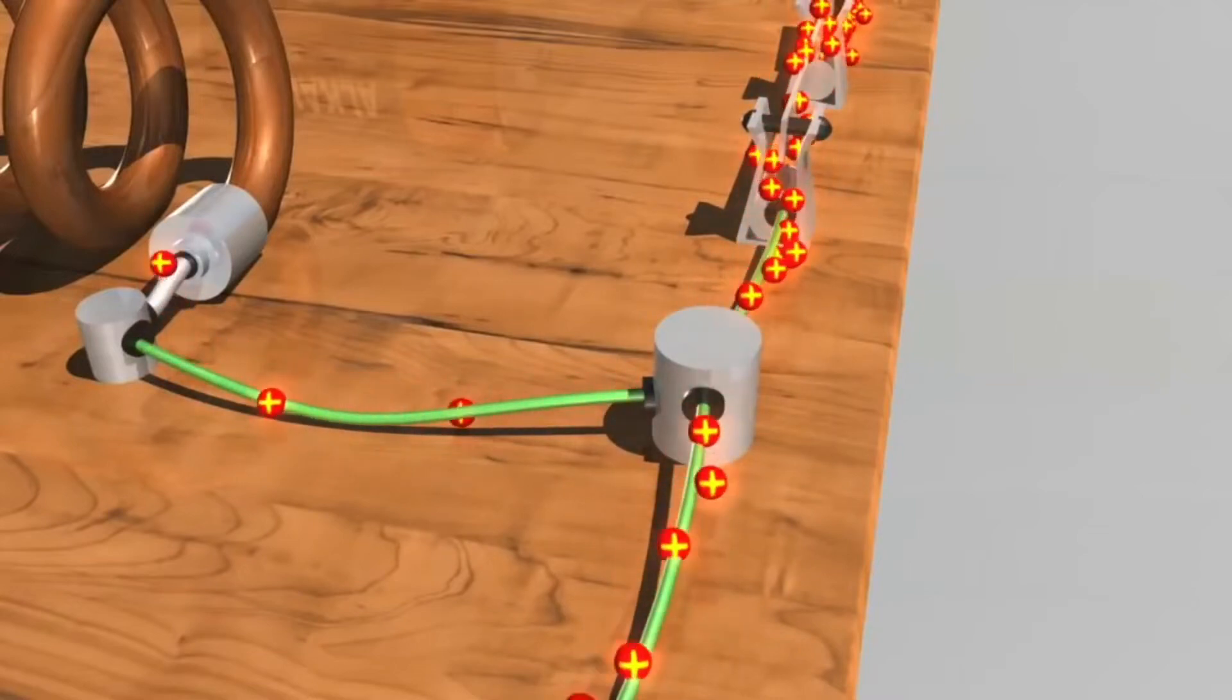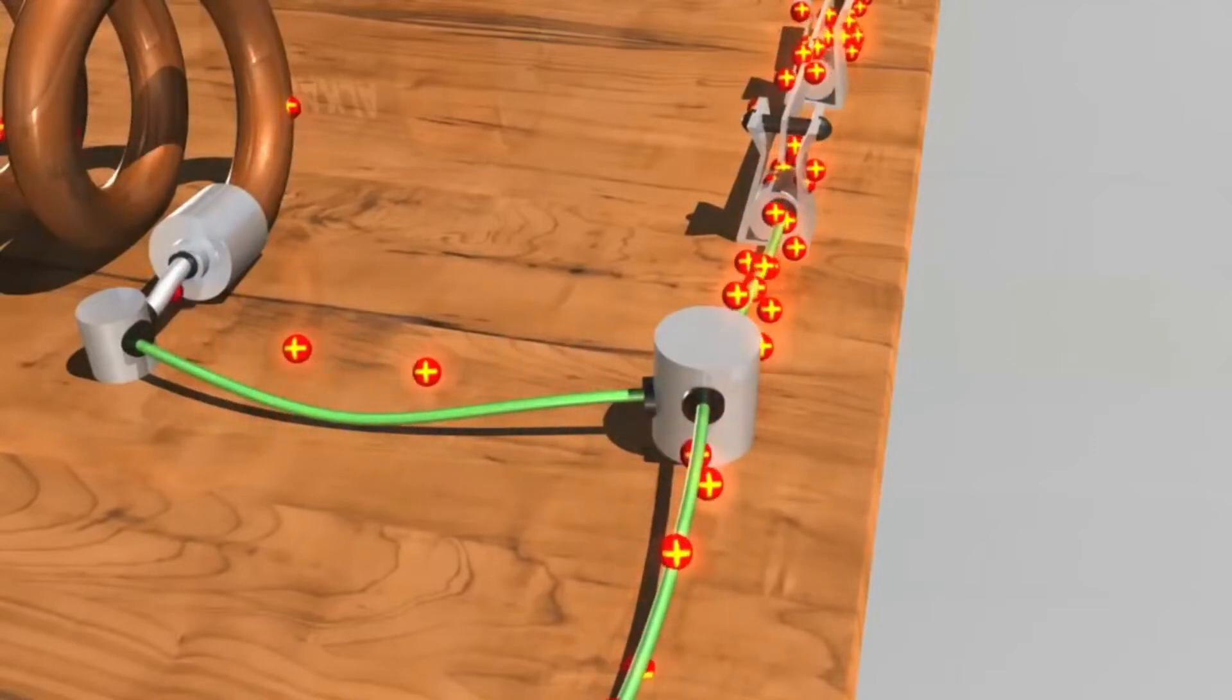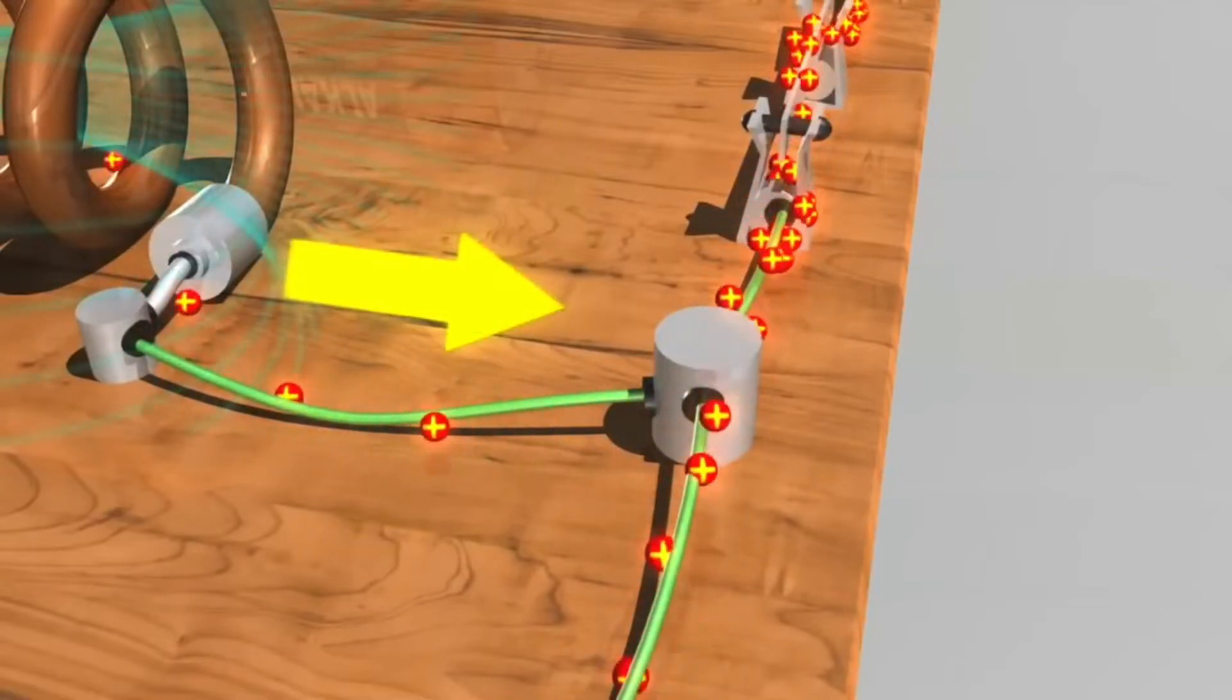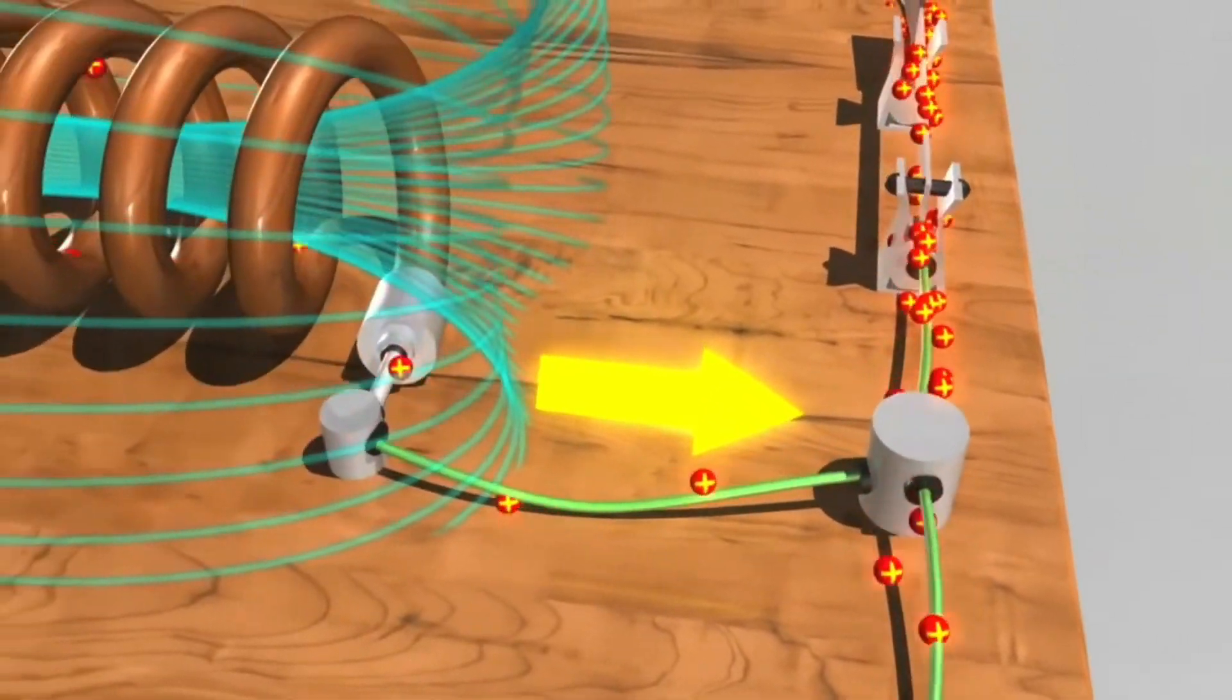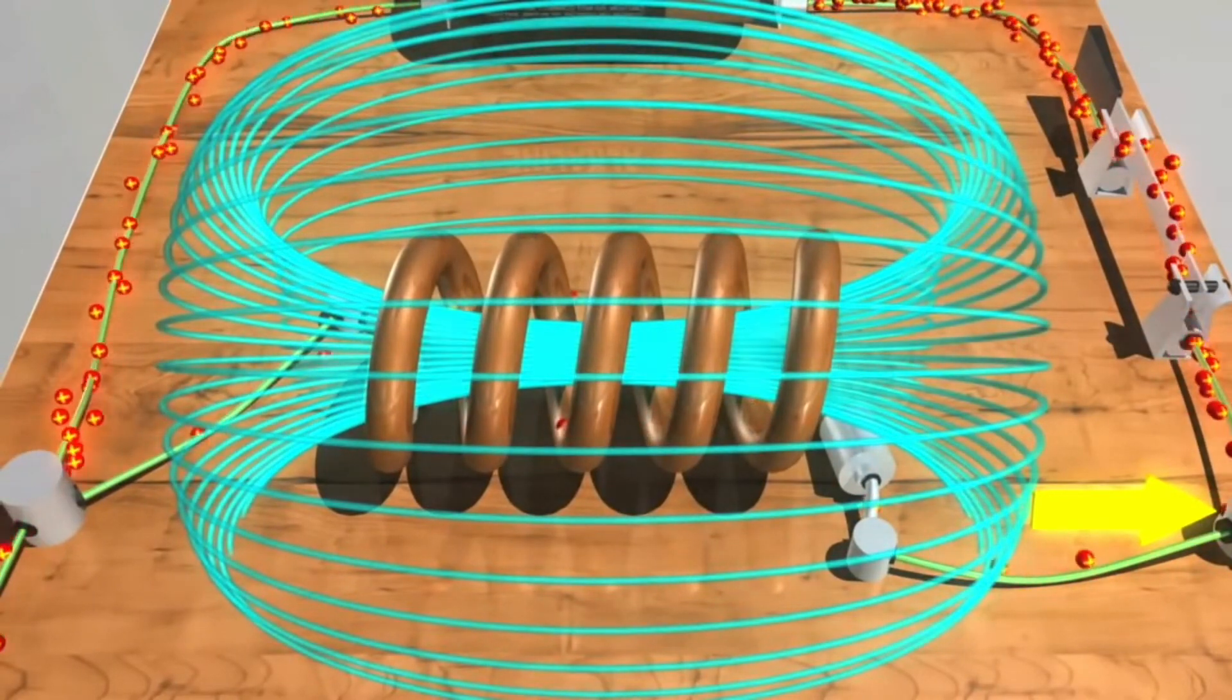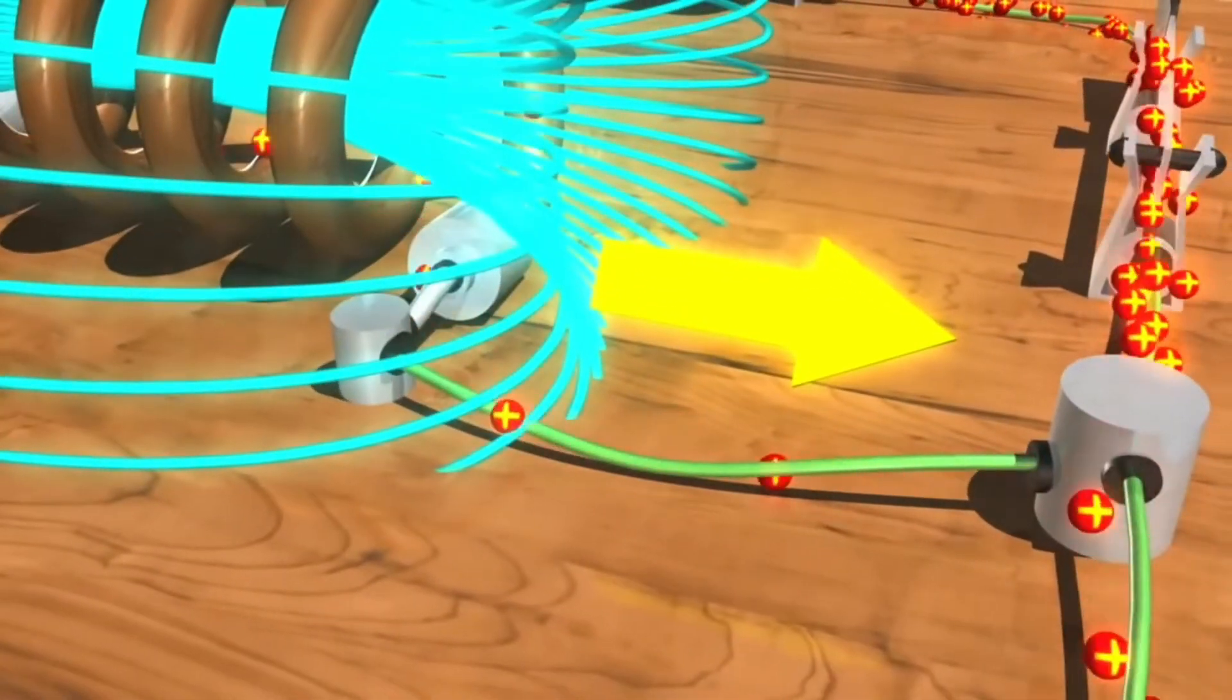At first, the current flows much more strongly towards the light bulb. This happens because as the magnetic field in the inductor grows, it induces its own voltage through Faraday's law. This is called electromagnetic induction. So the inductor here is creating a back EMF, represented by this yellow arrow.